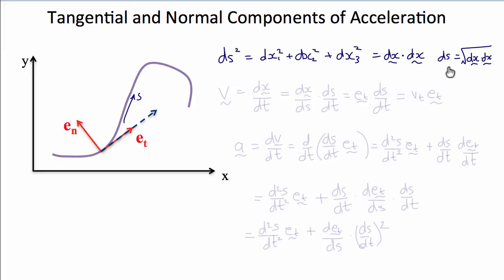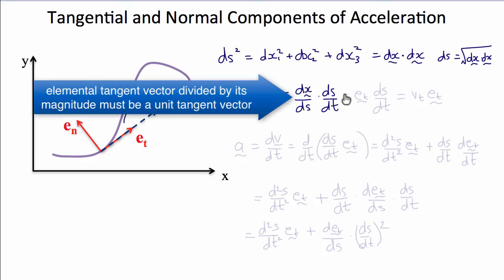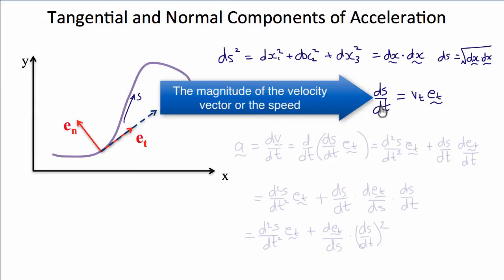All we really need to know is that this relationship exists. The velocity, which is dx dt or x-dot, can therefore by the chain rule be written as dx ds times ds dt. Now dx ds is the vector normalized by its length, so it's a unit vector along the tangent of the motion — that's e sub t — and ds dt is just the magnitude of the velocity component along the tangent direction, so it's the magnitude of the velocity vector.